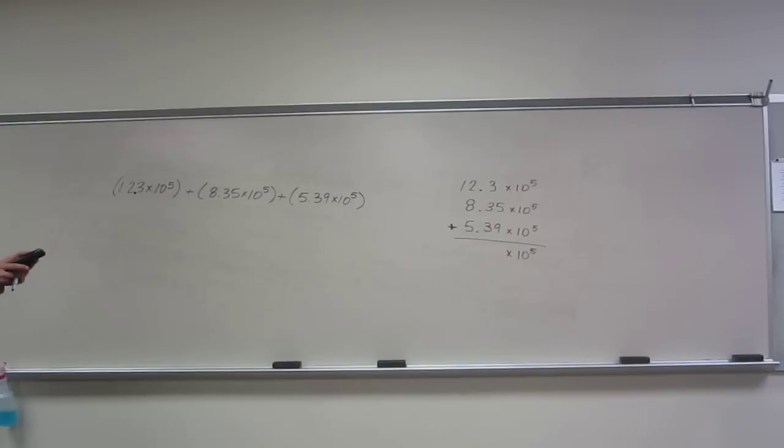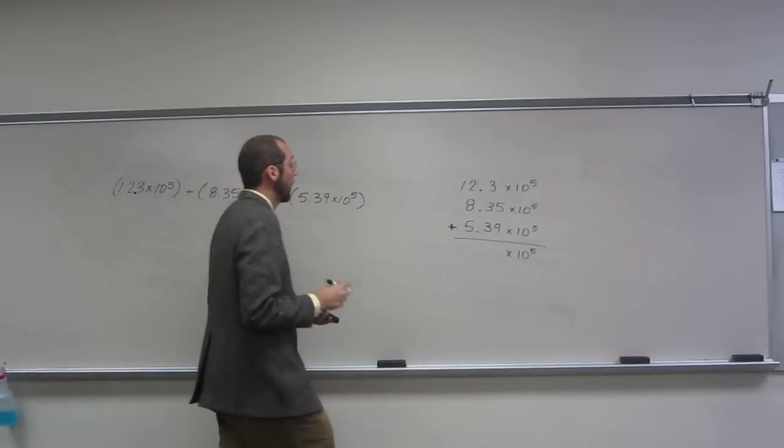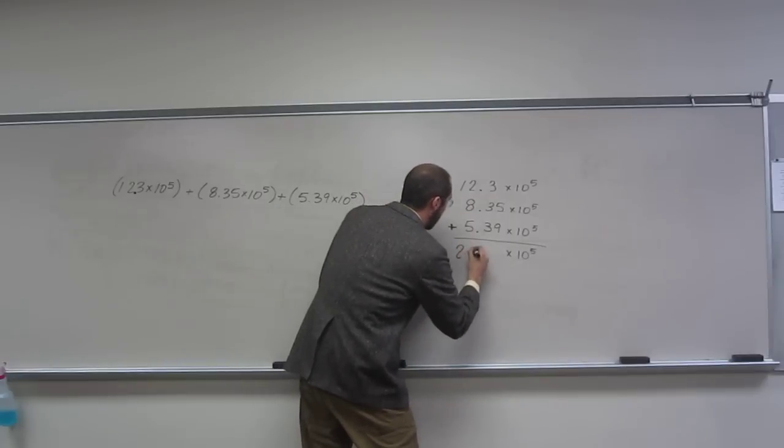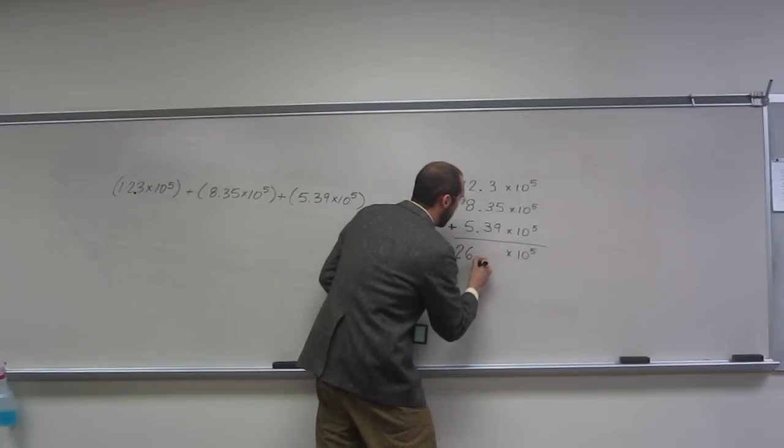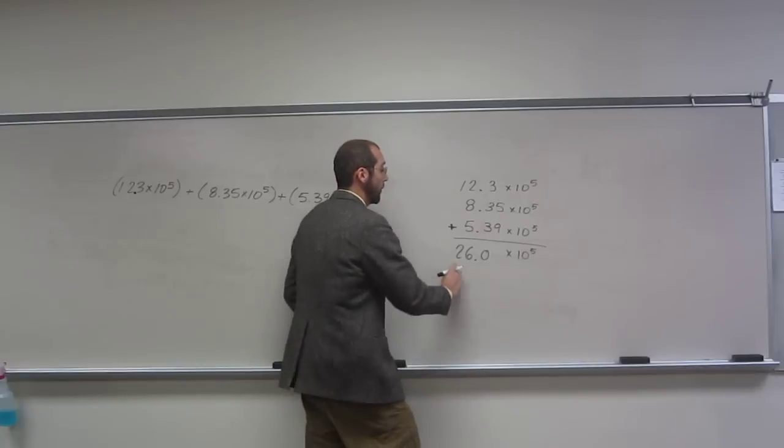So, 12.3 plus 8.35. When we do that we're going to get 26.0 and then that 4 which is next is going to not be there. Because we only want to go one pass.